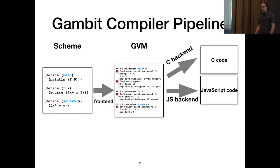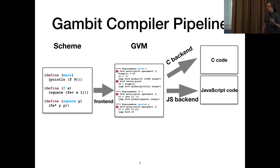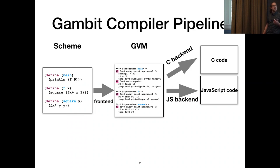It's fairly standard with a front-end and some back-ends. The front-end takes the Scheme code and generates code for the GVM, the Gambit Virtual Machine, and then the back-ends take that code and generate their own target code. Currently there's a JavaScript back-end and also a C back-end. The C back-end is the most mature and the most performant back-end of the two, and is in some ways the reference implementation of Gambit.